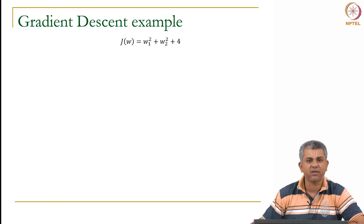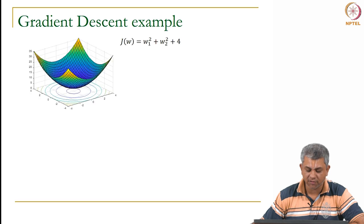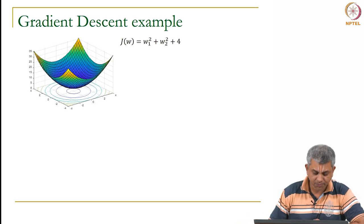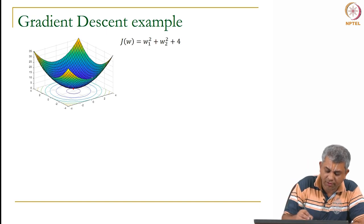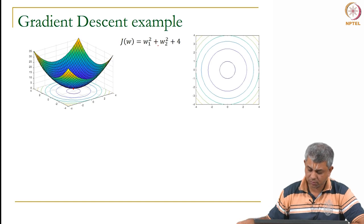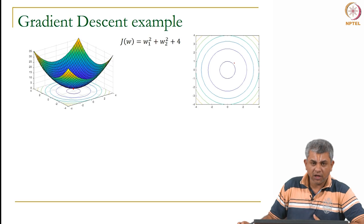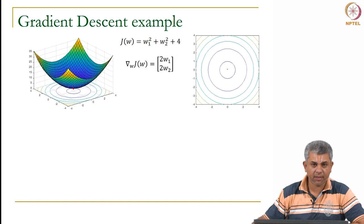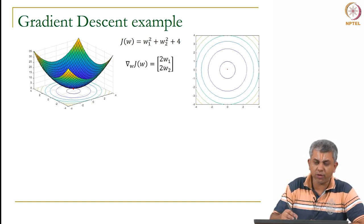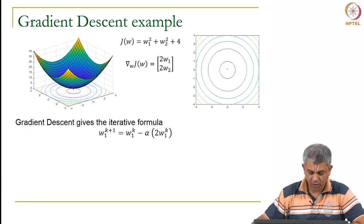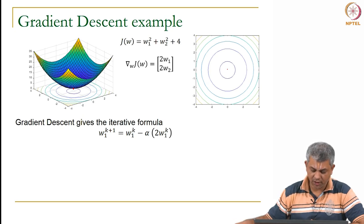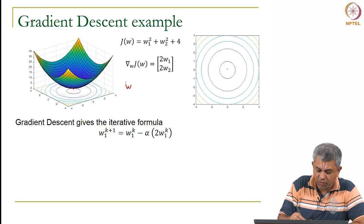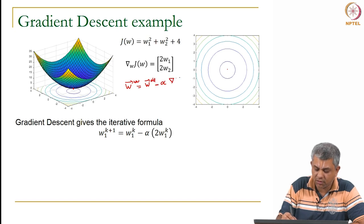Let us take a very simple function for which we already know the minimum: j = w1² + w2² + 4. We know that the actual minimum is at (0, 0). Here are the contours, which are circles because j is constant when w1² + w2² is constant — circles centered at 0. The analytical gradient is simply the vector (2w1, 2w2). The iterative formula is: w_new = w_old minus alpha times grad j. So w1^(k+1) = w1^(k) minus alpha times 2w1^(k), and similarly w2^(k+1) = w2^(k) minus alpha times 2w2^(k).